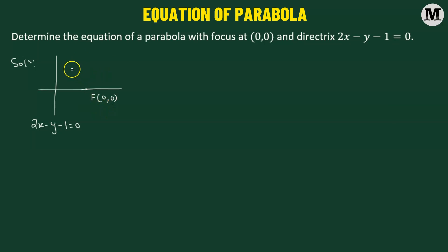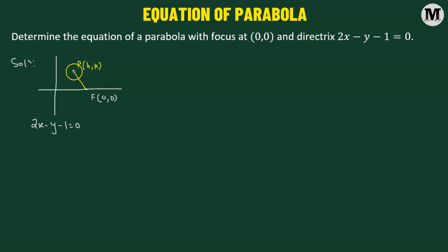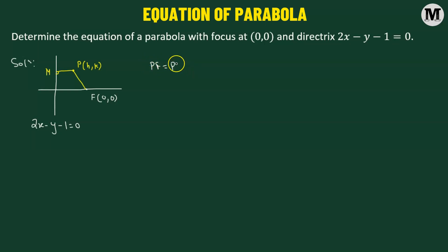To begin with, we are going to consider a point P with coordinates (h, k). P is going to be the locus of the parabola. To find the equation of the parabola, we'll join point P and point F, and we can find this length using the distance formula. Then we'll drop a perpendicular from point P on the directrix line, meeting it at point M. By definition of a parabola, PF equals PM.